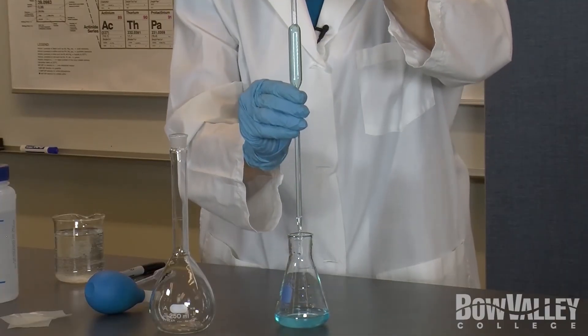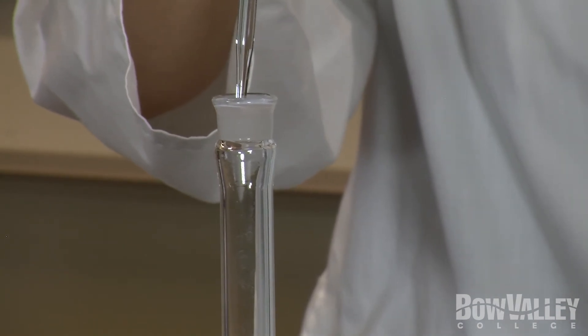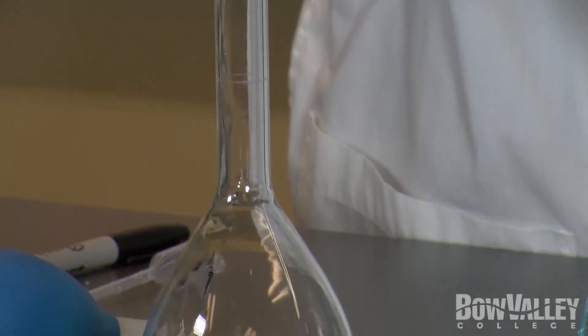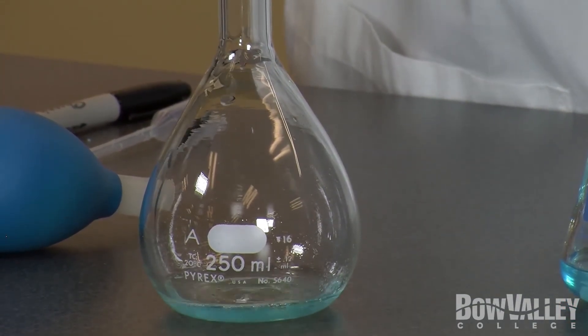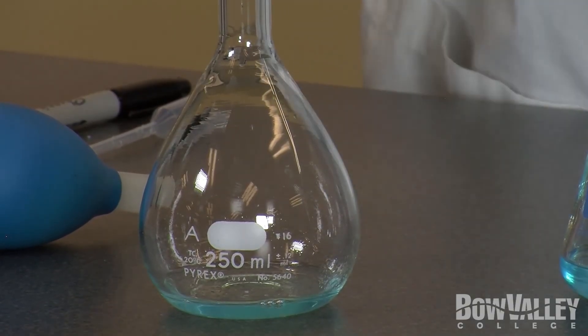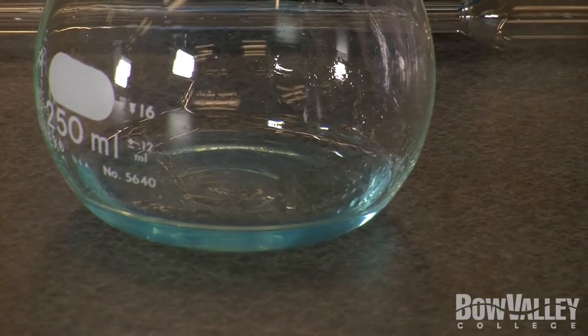Once you have the required amount of liquid, pull the pipette out of the Erlenmeyer flask and insert it into a new 0.250 litre volumetric flask. Remove your index finger from the end of the pipette and allow all the liquid to drain into the flask. Don't worry, if a few drops remain in the pipette, these are calibrated to deliver the exact amount of liquid required.